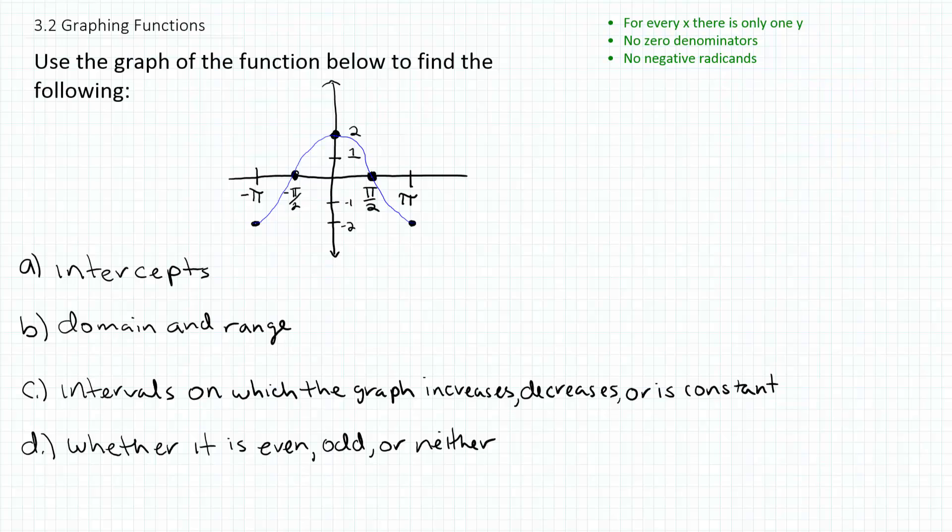Alright, so let's start with the intercepts. You can see visually from the graph that we have three intercepts: two x-intercepts and one y-intercept. So let's talk about the y-intercept first. That would be right here. The y-axis is intercepted at y equals 2, so the y-intercept is at y equals 2, or in other words, the point x equals 0 and y is 2. So that's your y-intercept.